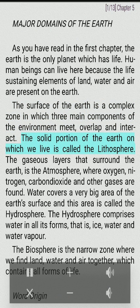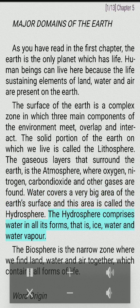The solid portion of the Earth on which we live is called the lithosphere. The gaseous layers that surround the Earth is the atmosphere, where oxygen, nitrogen, carbon dioxide and other gases are found. Water covers a very big area of the Earth's surface and this area is called the hydrosphere. The hydrosphere comprises water in all its forms — ice, water and water vapor. The biosphere is the narrow zone where we find land, water and air together, which contains all forms of life.